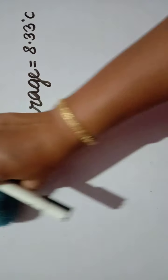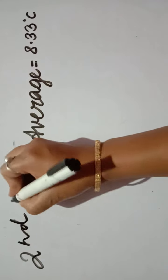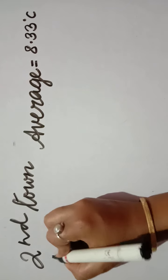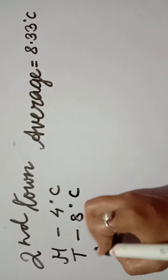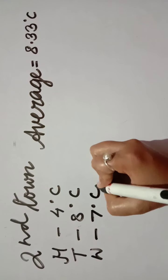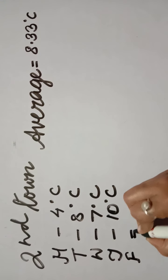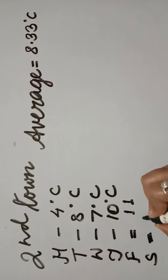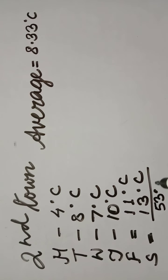Now we will find the average of the second town. The second town has the following temperatures: Monday 4°C, Tuesday 8°C, Wednesday 7°C, Thursday 10°C, Friday 11°C, and Saturday 30°C. After adding all the temperatures, we get 53 degrees centigrade.